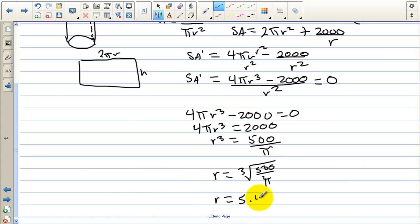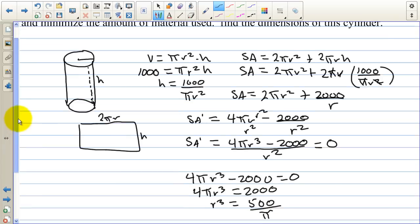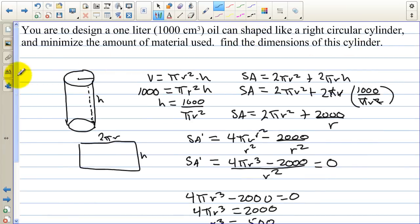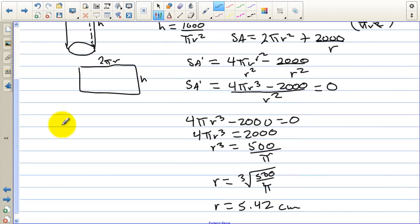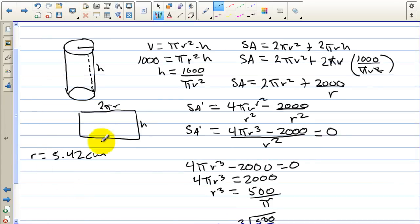So r equals 5.42. And we have, that's going to be in centimeters. But what's the question? What are we asked to do? Find the dimensions of this cylinder. So we have what r is. Remember, r is 5.42 centimeters. We have the radius. Now we need the height. And if I plug this value in for r squared, the height equals 1,000 over pi times 5.42 squared. And that value is 10.84. H is 10.84.